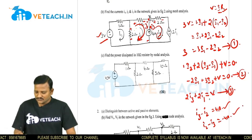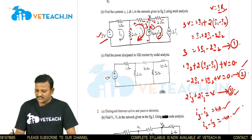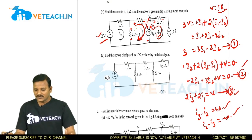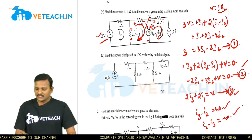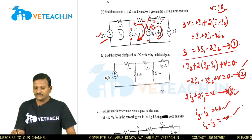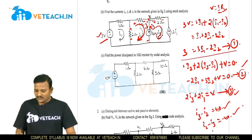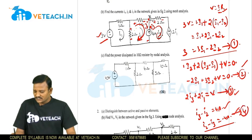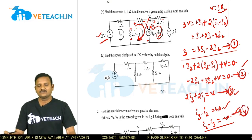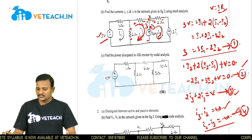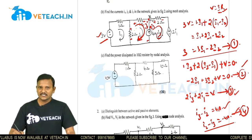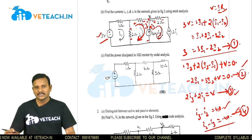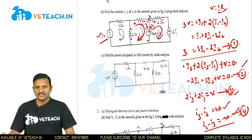By substituting equation 3 into equation 2 and using equation 1, we express everything in terms of I1, I2, and I3. By simplifying these equations, we obtain the values of I1, I2, and I3.